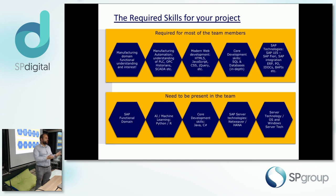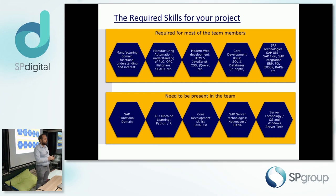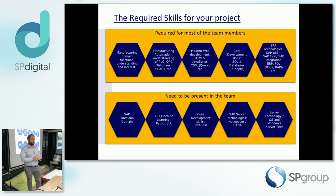Electronics uses a lot of statistical process control and integration. Food and beverage — if you have a line producing bottles or liquids. I've worked with all of those industries. When designing this factory of the future, what can you automate and what cannot be automated?